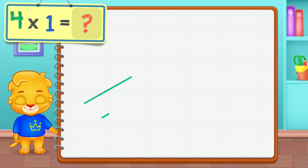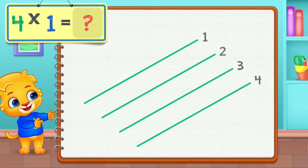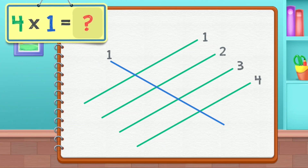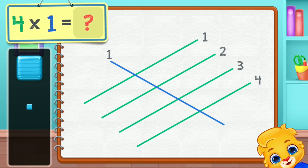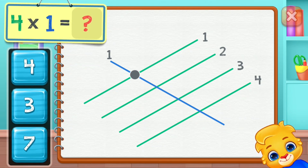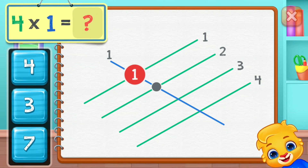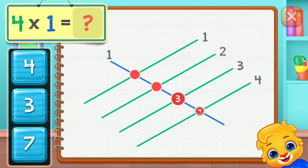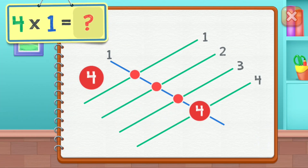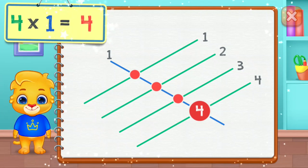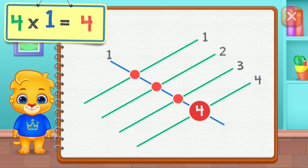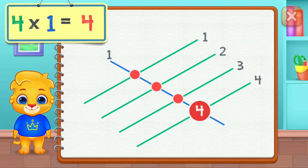Four times one equals one, two, three, four. Four times one equals four.